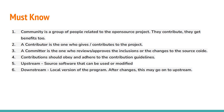You need to know some terminologies connected to the open source community. Community is a group of people related to the project — they contribute and get benefited. A contributor is the one who gives or contributes to the project. A committer is the one who reviews the project and approves the changes. Contributions must adhere to the contribution guidelines. Upstream is the source software — the main content. Downstream is the local version of the main content, which developers or community builders can change, and it can then be added back to upstream.